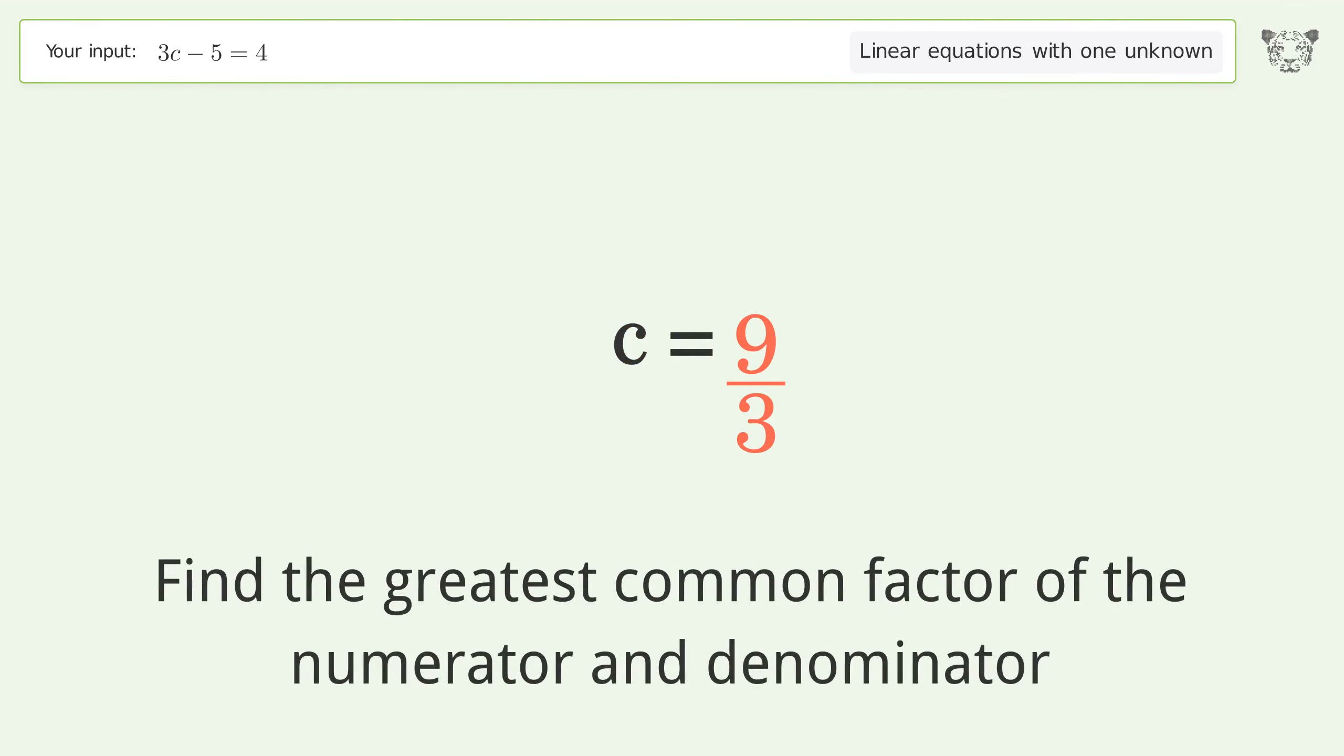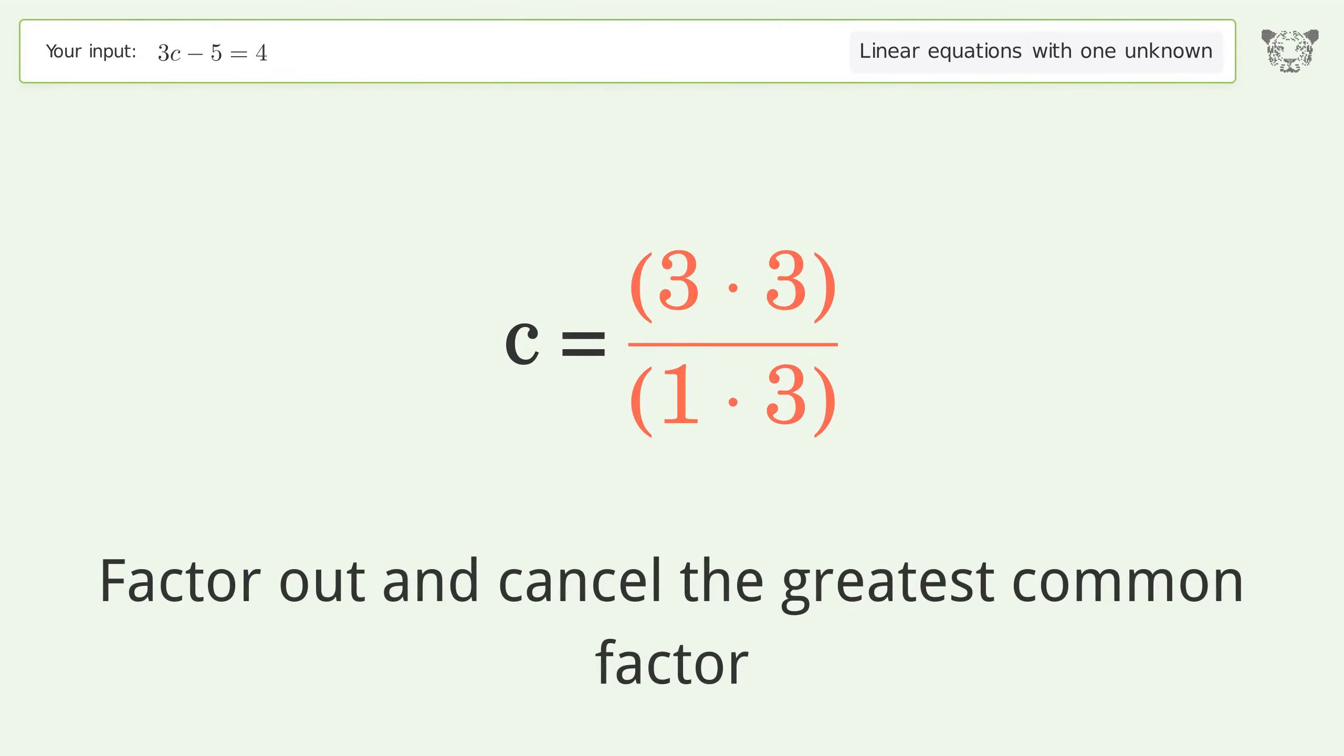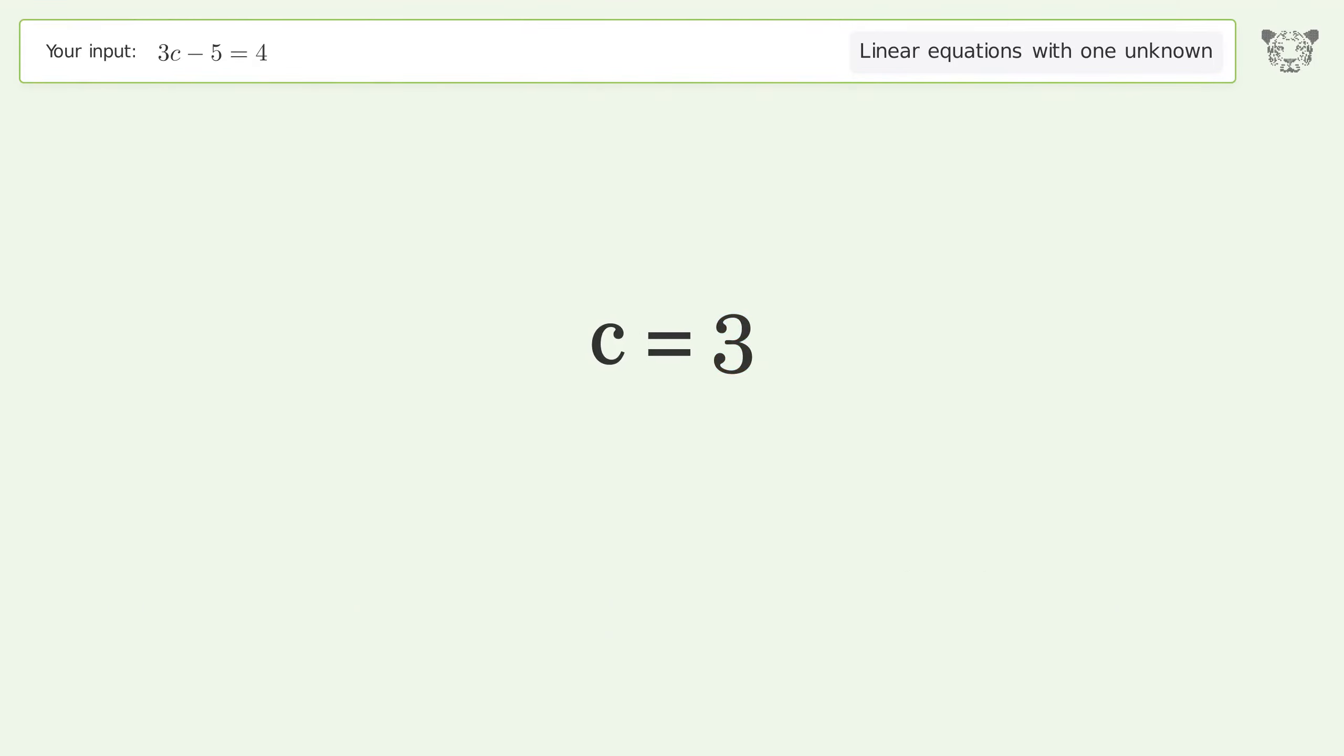Find the greatest common factor of the numerator and denominator. Factor out and cancel the greatest common factor. And so the final result is c equals 3.